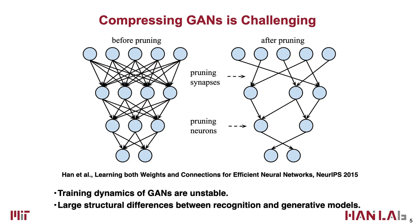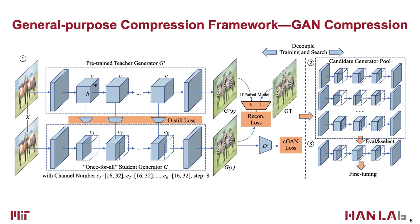To address the above issues, we propose GAN Compression, a general-purpose compression framework for Conditional GANs, which includes a training protocol tailored for efficient generative models and powered by neural architecture search.